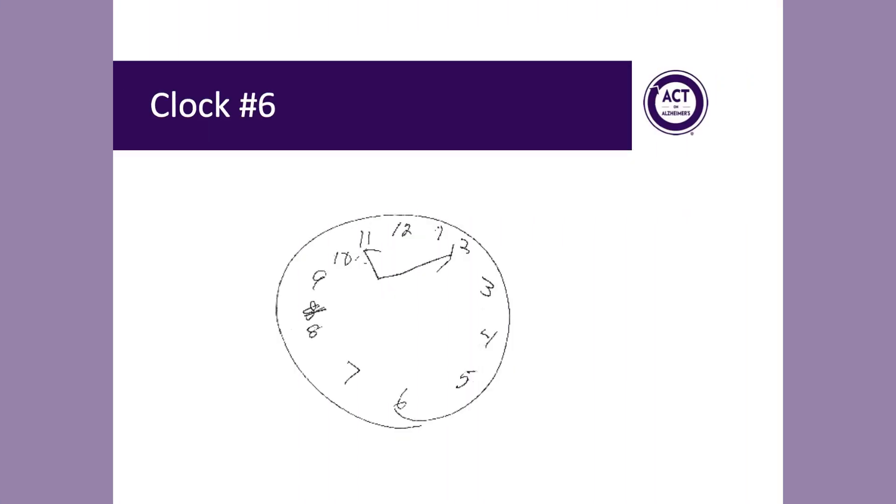In evaluating clock number 6, you will see that all of the numbers 1 through 12 are represented. However, in this example, the patient accidentally drew two number 8s in a row. They spontaneously recognized this error, crossed out the second 8, and were forced to draw the 9 a bit higher on the clock. Because the patient spontaneously recognized and corrected their error, we would give them the benefit of the doubt. When setting the hands, they appropriately drew one hand to the 11 and a second hand to the 2. Therefore, this would be a full credit 2 point clock. It is important to recognize that it is not necessary for the fulcrum of the hands to be in the exact center of the circle.